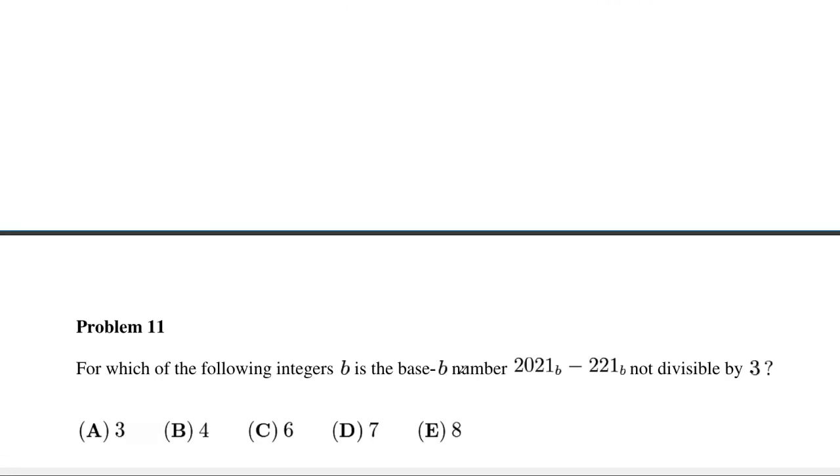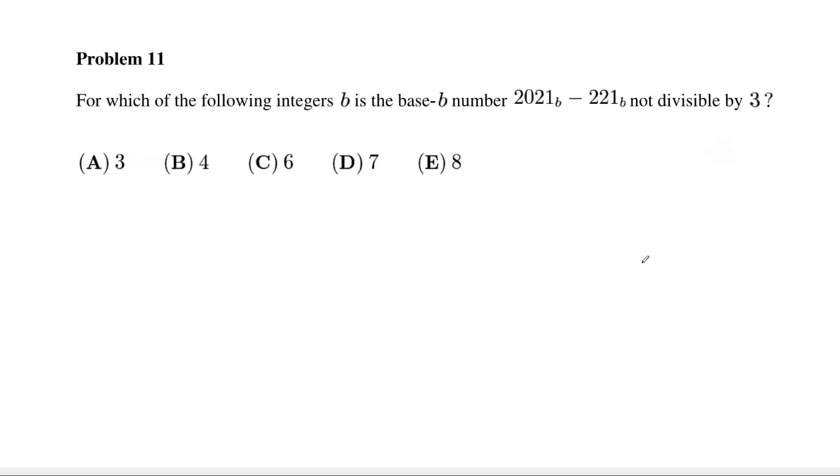Now move on to number 11 over here. You know what is the base number B expression. So 2 to the, this is B1, B2, B3. 2 to the cube plus 2 to the B1 and plus 1. That is the base number B expression. And we subtract 2 times B to the square and 2 times B and plus 1. So this is not divisible by 3. So general mod 3.